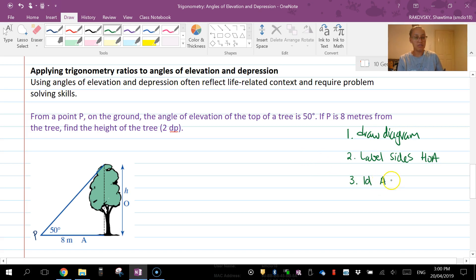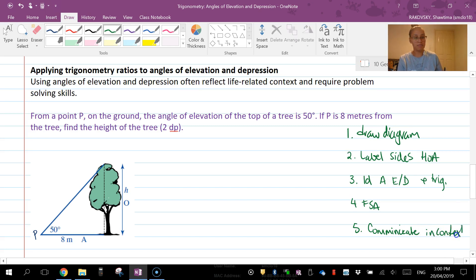The second is going to be label sides, so HOA. The third is going to be ID your angle of elevation depression and your trig ratio. And the four is going to be FSA, so actually doing the math. And five is communicating in context.